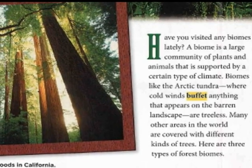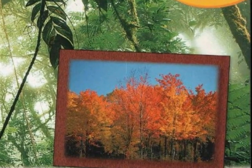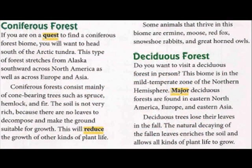Here are three types of forest biomes. Coniferous Forest: If you are on a quest to find a coniferous forest biome, you will want to head south of the Arctic tundra. This type of forest stretches from Alaska southward across North America, as well as across Europe and Asia. Coniferous forests consist mainly of cone-bearing trees such as spruce, hemlock, and fir. The soil is not very rich because there are no leaves to decompose and make the ground suitable for growth, which reduces the growth of other kinds of plant life.